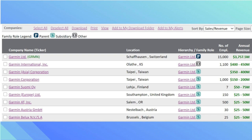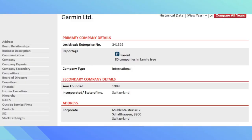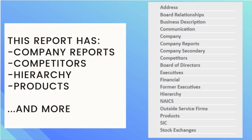When the results populate, you can see which company is a parent with a P, or a subsidiary with an S, under the hierarchy/family role column. Once the results populate, on the left-hand side you can look through the different categories. This particular report has information about their company reports, such as their 10-K, their competitors, a hierarchy, products, and more.